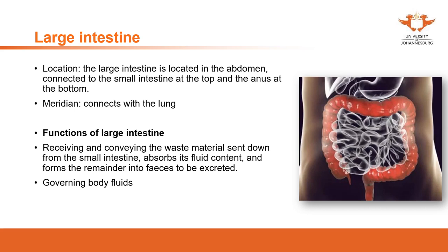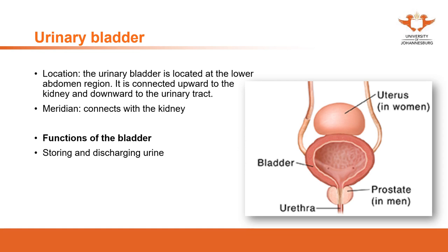The next organ is the bladder. The bladder is located in the lower abdominal region, connected upwards to the kidney and downwards to the urinary tract. The bladder meridian connects with the kidney - these are the coupled organs. The main function of the bladder is storing and discharging urine.